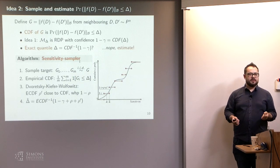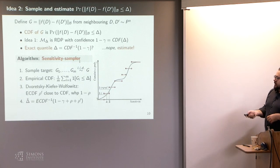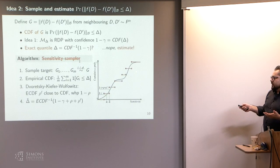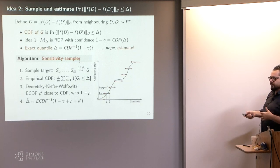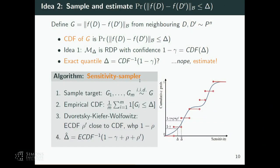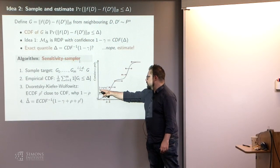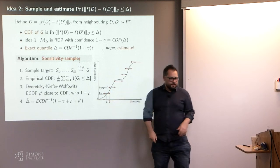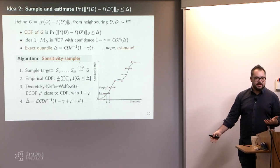The DKW inequality says you have a uniform confidence band around the empirical CDF that includes the true CDF with high probability. The band is determined by rho-prime and rho — you can choose them based on how many samples you have. What we'd really like to do is invert this curve and get a sensitivity, but instead we'll be a little pessimistic — operating at a slightly higher sensitivity, randomizing a little more than necessary by accounting for the confidence band around the empirical staircase. Inverting the empirical CDF is really easy — you just sort your observations and walk along.